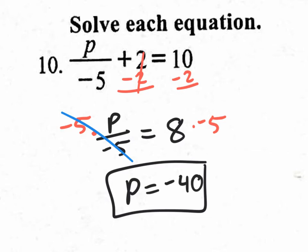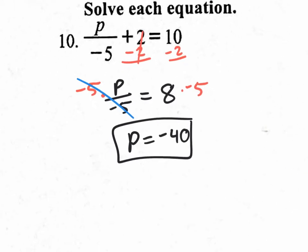You could have multiplied everything by negative 5 first to get rid of the fraction — that would cause slightly bigger numbers, but you'd still get the same answer. It's not really that big of a deal.